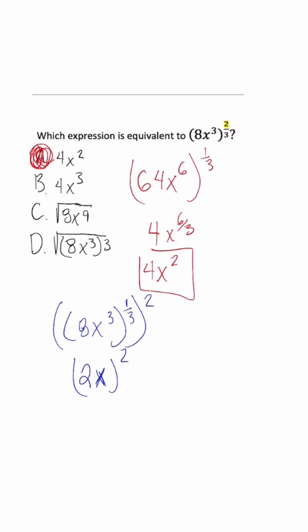And then once we square it, we pay attention to the outside exponent, this is just going to turn into 4x squared. And this is why it's very important for you to understand how to simplify rational exponents.